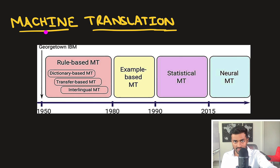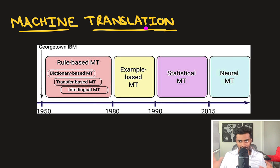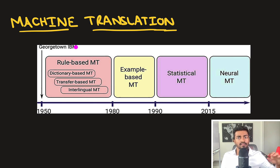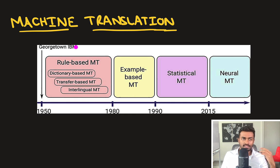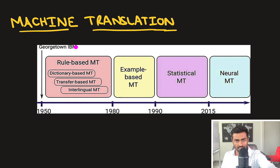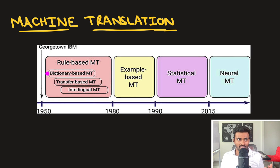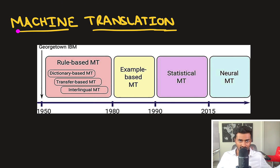Starting with machine translation, one of the very earliest forms of artificial intelligence was the Georgetown-IBM experiment. This was used during the Cold War era to translate between English and Russian. It was predominantly a rule-based system and was also the pioneer of many other rule-based systems to follow. But rule-based translation is extremely simplistic and can't really capture the very complex problem of machine translation itself.